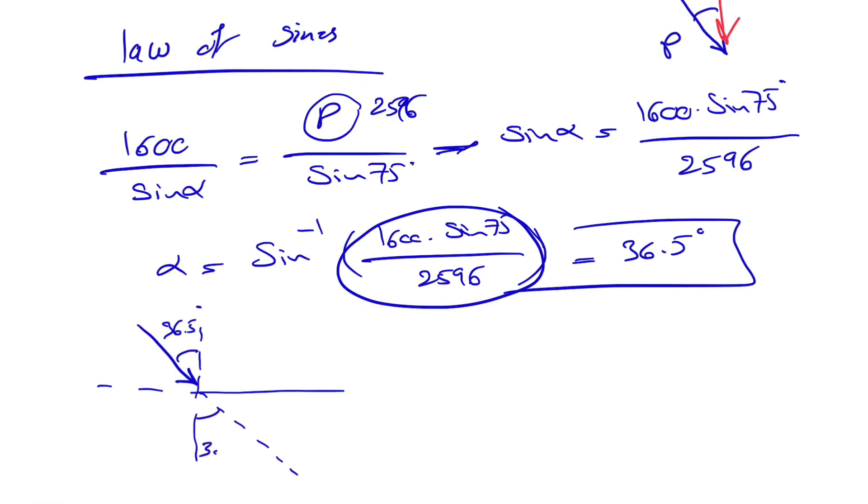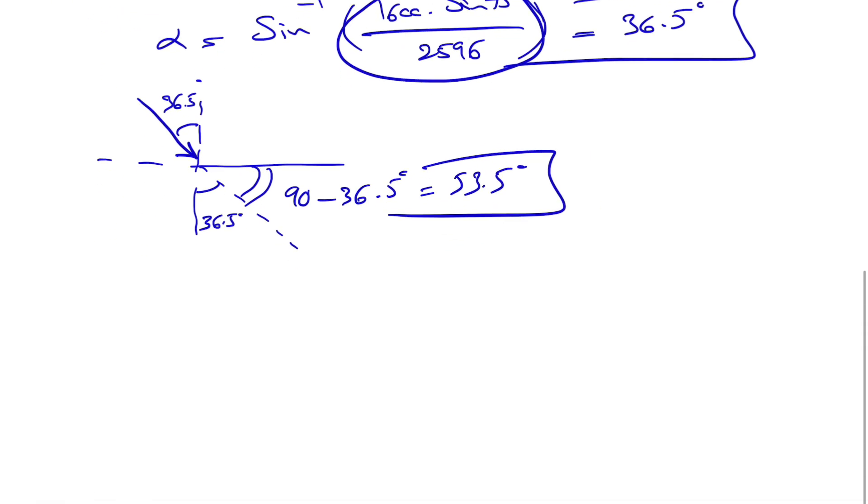And what we are interested in is this angle, which is 90 minus 36.5 degrees, or 53.5. And if you want to show our P, P will be...